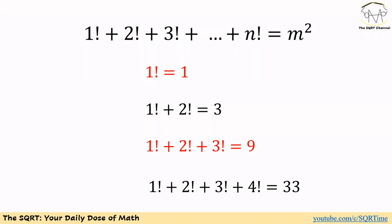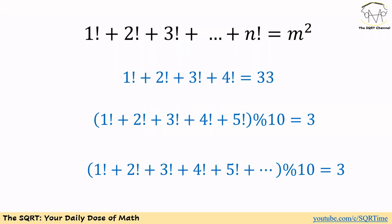We can see that 1 factorial is a perfect square, and 1 factorial plus 2 factorial plus 3 factorial equals 9, also a perfect square. But we don't have that for n equals 2 or n equals 4. For n equal to 5 and anything greater, remember that the sum up to 4 factorial is 33, and 5 factorial has 0 as its rightmost digit.